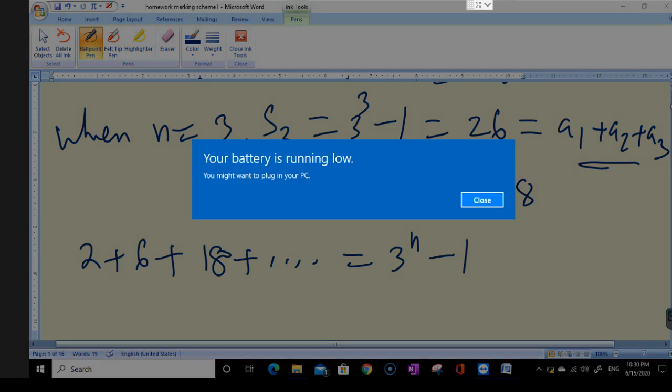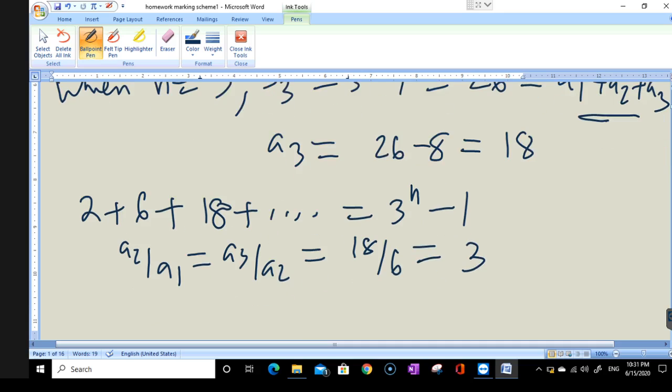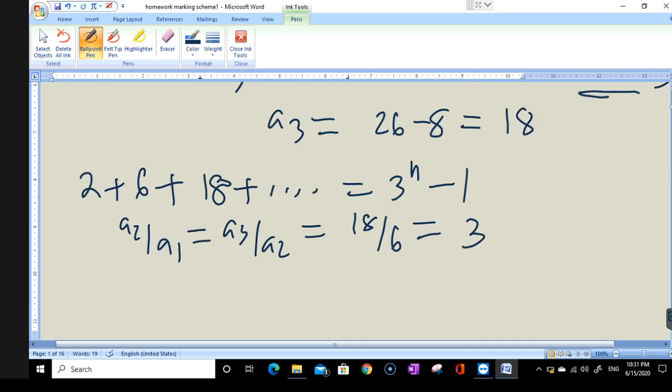As you can see, when I take a2/a1 = a3/a2, which equals 18/6 = 6/2 = 3, we have seen that 3 is the common ratio in this series.